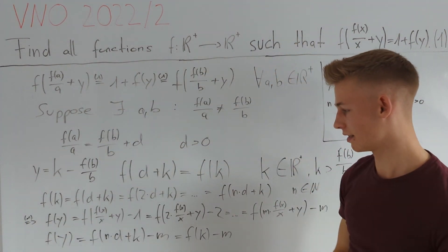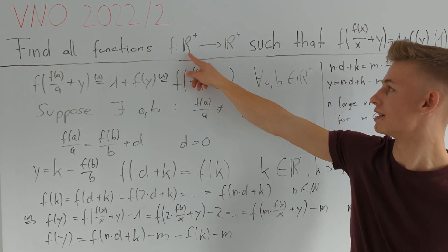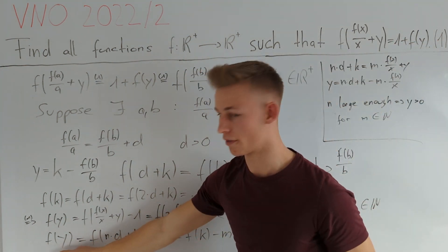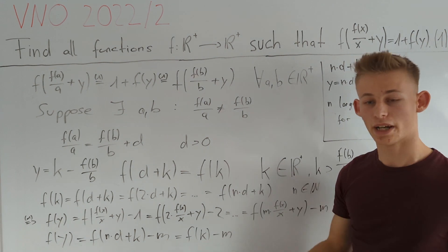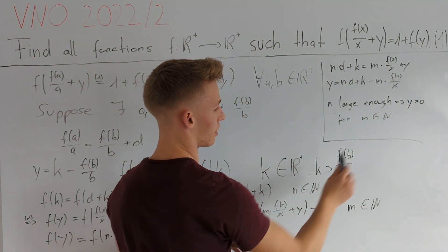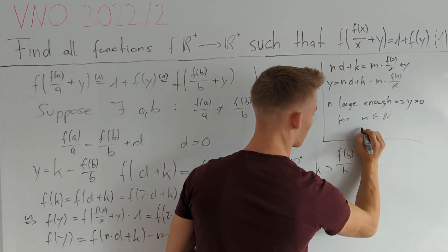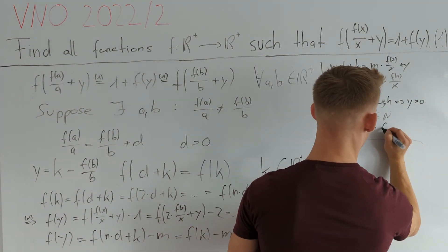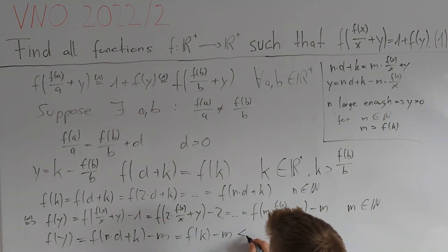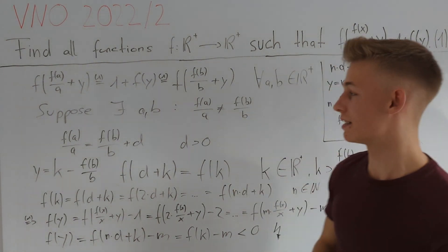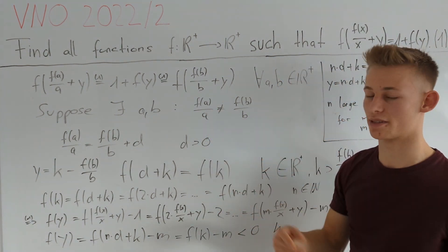So f(y) = f(k) − m. But since f maps positive reals to positive reals, f(y) must be positive. To get a contradiction, we need f(k) − m to be negative. We can choose m greater than f(k), and the equation must still hold — but then f(k) − m is less than zero. This is a contradiction, so f(a)/a cannot be unequal to f(b)/b, meaning f(a)/a must be a constant.